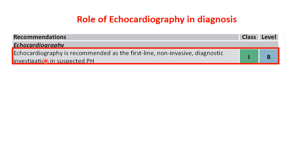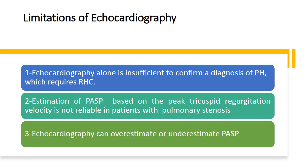Echocardiography is recommended by the European Society of Cardiology as the first-line non-invasive diagnostic investigation in patients with suspected pulmonary hypertension. However, echocardiography alone is insufficient to confirm the diagnosis of pulmonary hypertension, which requires right heart catheterization.